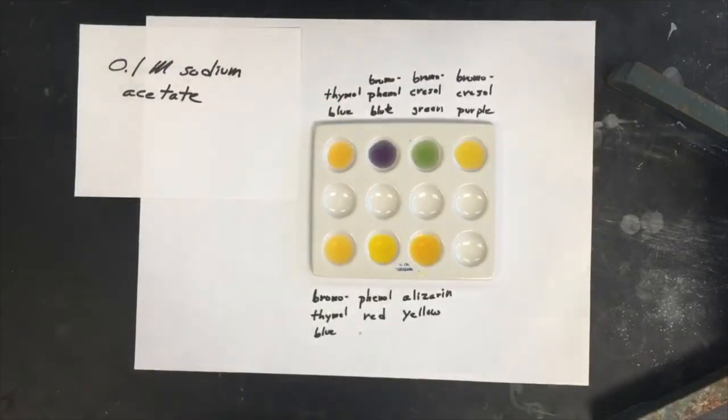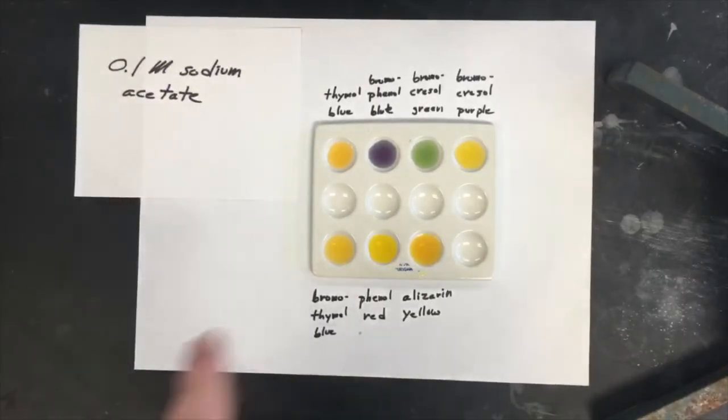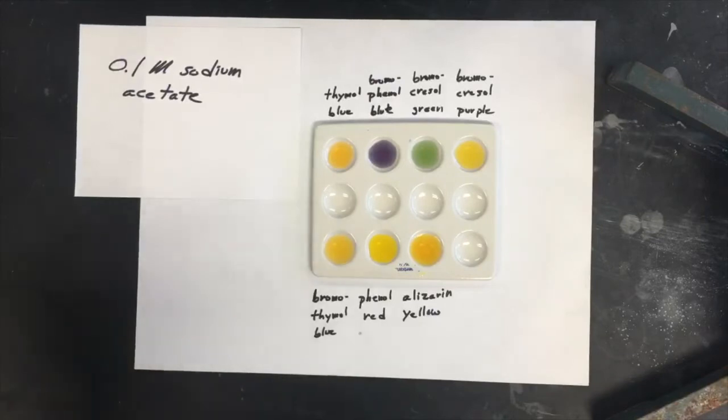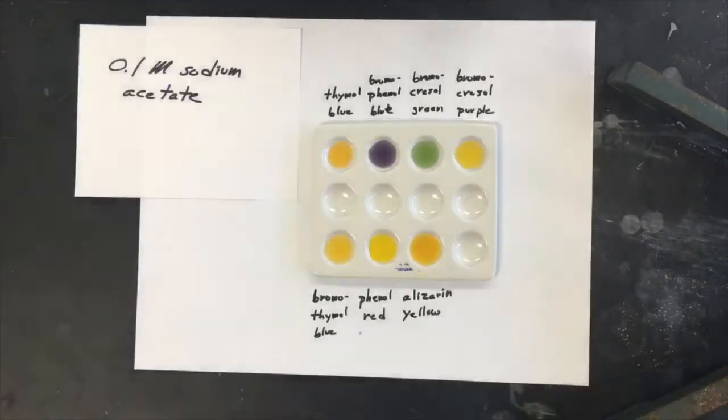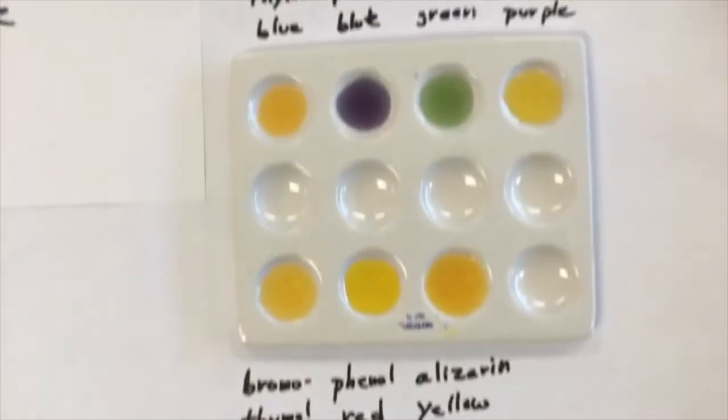So here's the next solution being tested. It's 0.1 molar sodium acetate. And we have the indicators in the same wells as before and labeled on the page. I mixed three drops of sodium acetate, 0.1 molar with one or two drops of each of the indicators. Mixed each well with a glass rod rinsing in between. So let me zoom in so you can see a little bit better or maybe take a little bit more note of what's going on.